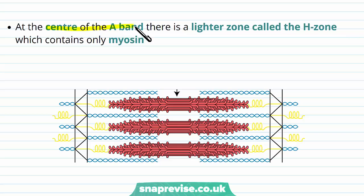If you look in the centre of an A band, there's a lighter zone, called the H zone, where there's only myosin.